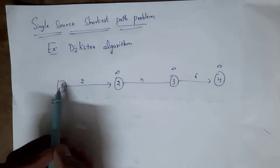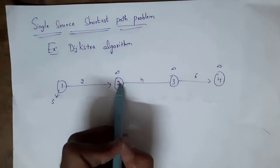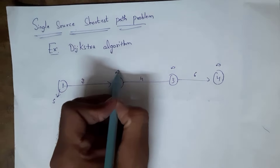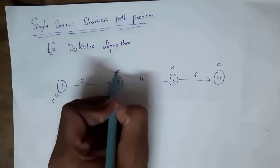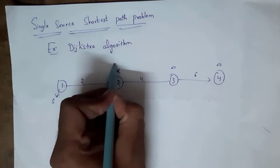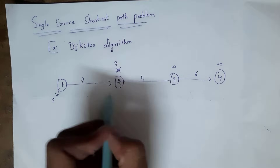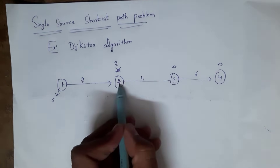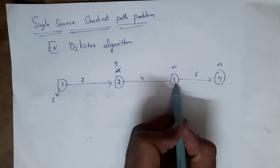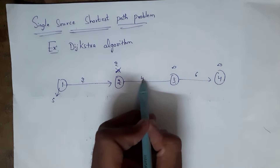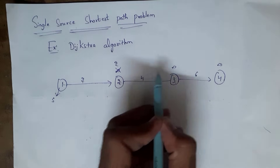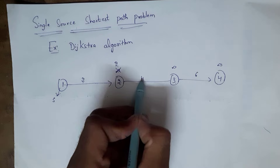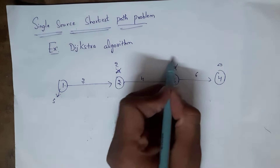From node 1 to node 2, the distance is 2. So replace this infinity with 2 — I have visited node 2. Similarly, from node 2 to node 3, the distance is 4. So we need to replace this infinity with 2 plus 4, that is 6.